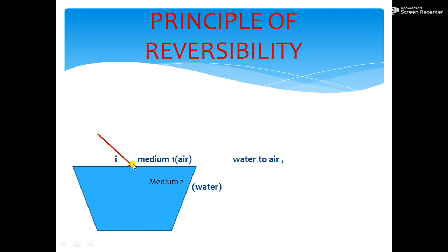In this case, light ray is travelling from rarer medium air to denser medium water. So, it slows down and it bends towards the normal.